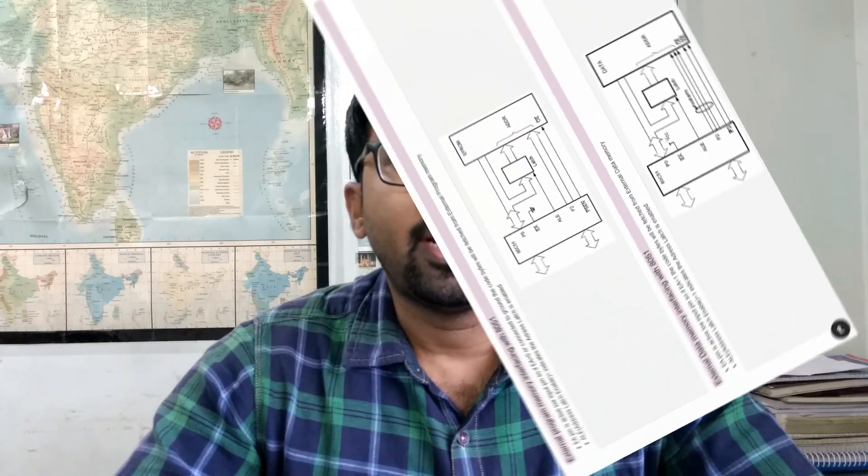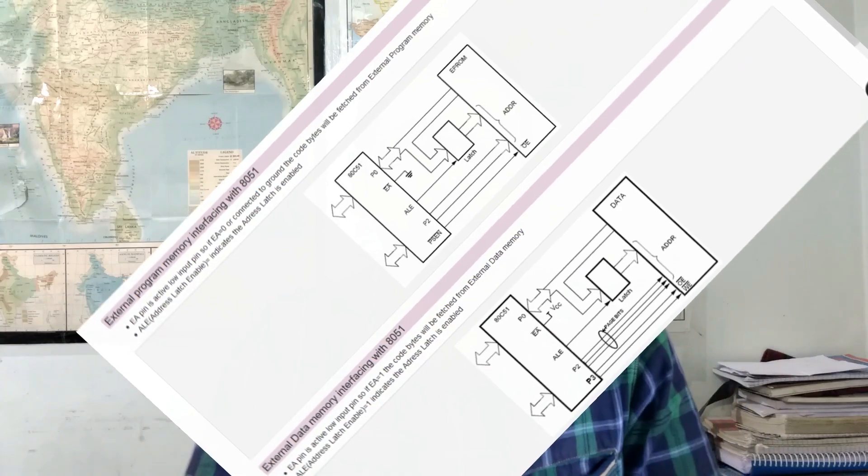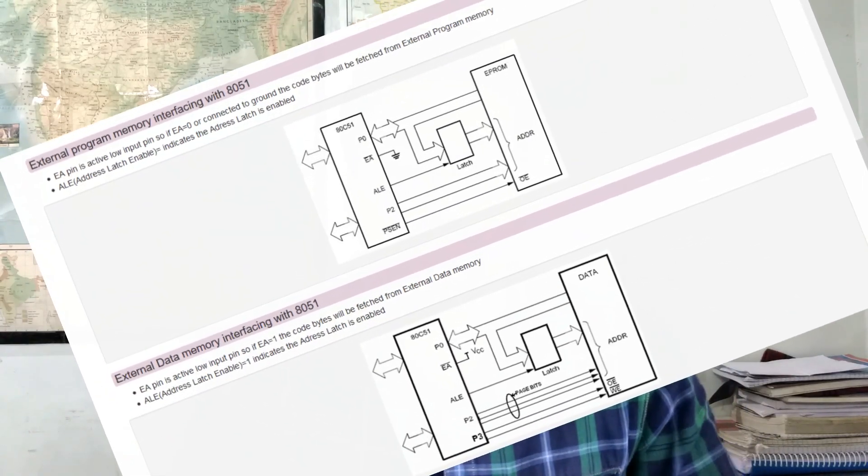First question: state the different features of 8051 based microcontroller. It is an 8-bit CPU which has CISC core and Harvard memory architecture.